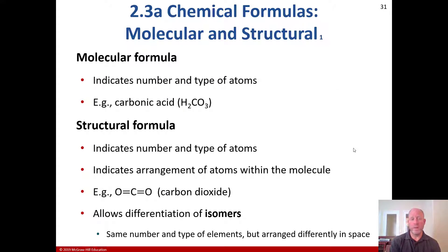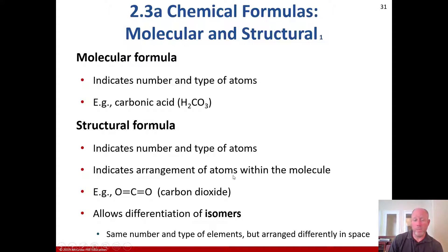A molecular formula is really just the number and type of atoms. Carbonic acid is H2CO3 — 2 hydrogen, 1 carbon, 3 oxygen. A structural formula indicates the number and type of atoms and also the arrangement of atoms within the molecule itself. In the case of carbon dioxide, it's rather simple — just showing the two different bonds, with oxygen on either side of the carbon for CO2.